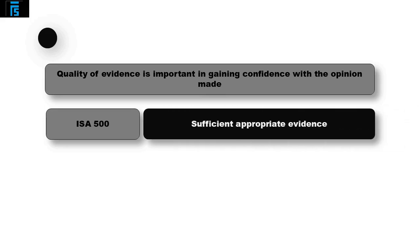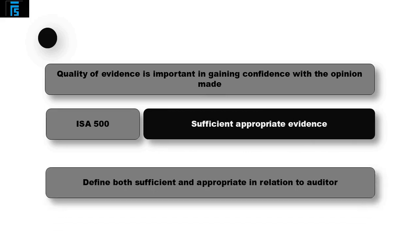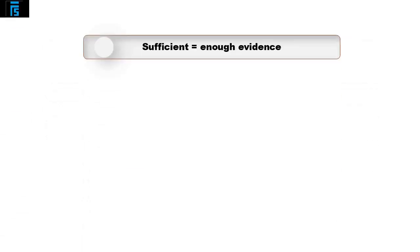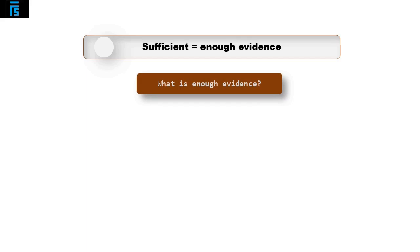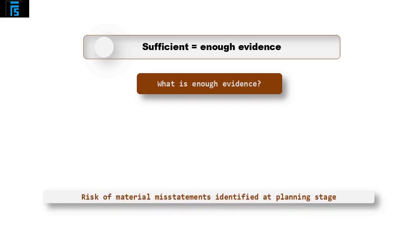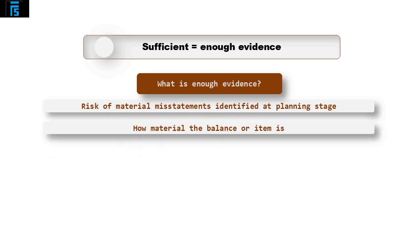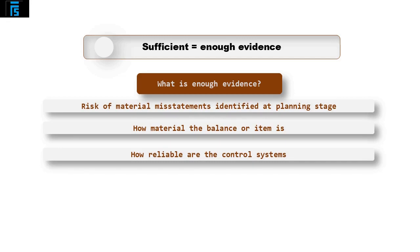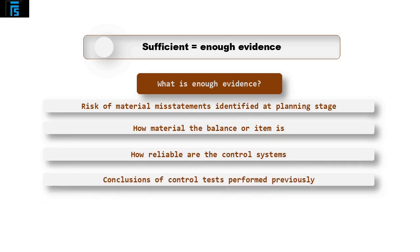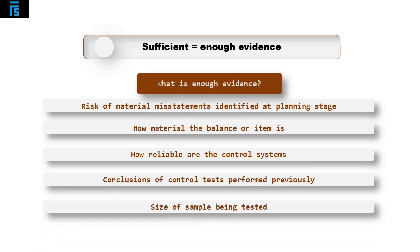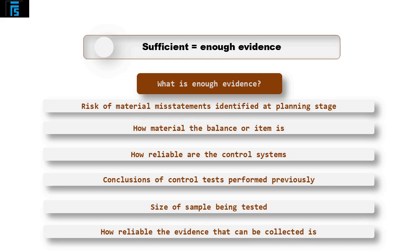ISA 500 tells us that audit procedures must be designed so that the auditor gathers sufficient appropriate evidence. Sufficient means enough evidence — the auditor must consider the risk of material misstatements identified at the planning stage, how material the balance is, how reliable the control systems are, the conclusions of control tests, the size of the sample being tested, and how reliable the evidence that can be collected is.